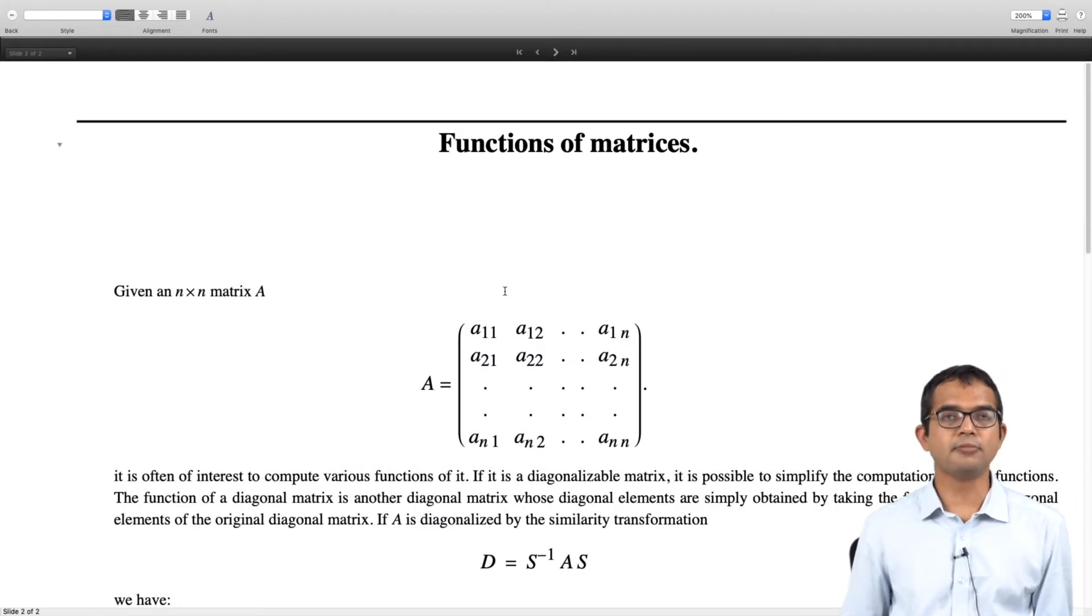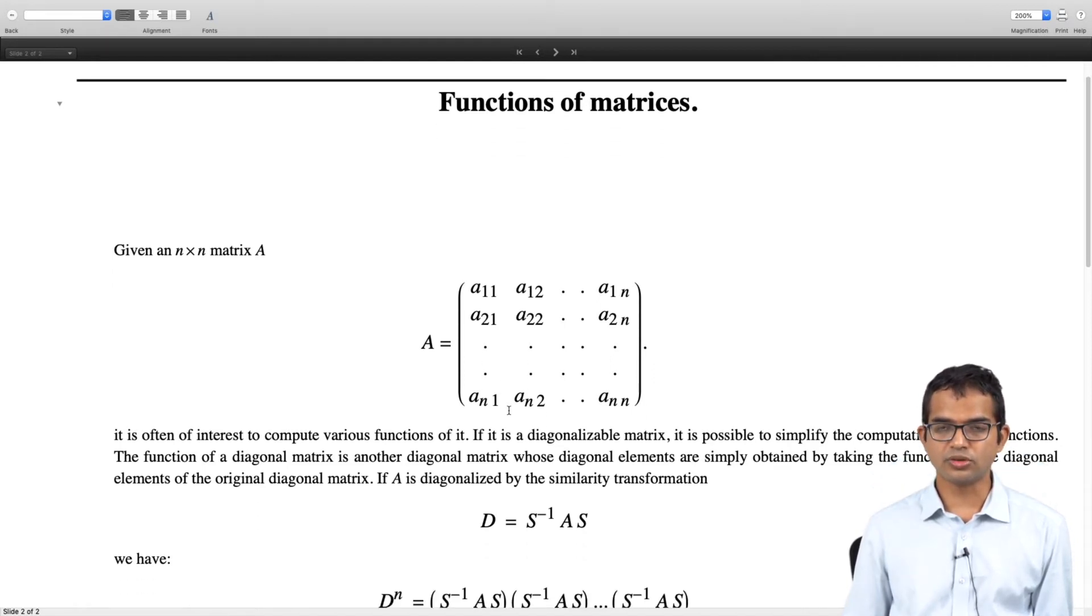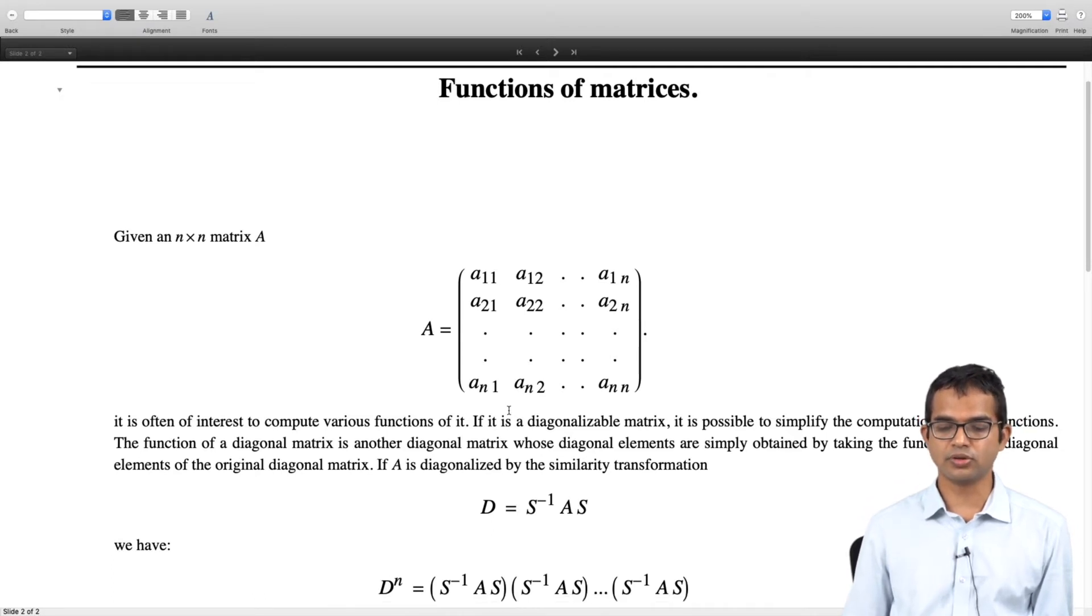Okay, so given an n by n matrix A, often times we are interested in looking at what A squared is, or A cubed, or A to the power n, or in general some function of this matrix A. Now if it is a diagonalizable matrix then this kind of computation is greatly simplified. All you have to do is work out the similarity transformation which diagonalizes it. If you can somehow work this out, D equals S inverse A S.